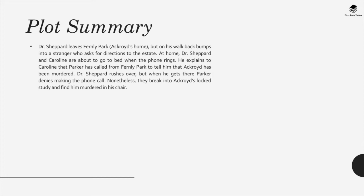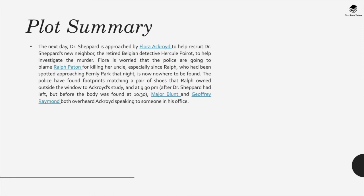Nonetheless, they break into Ackroyd's locked study and find him murdered in his chair. The next day, Dr. Shepard is approached by Flora Ackroyd to help recruit Dr. Shepard's new neighbor, the retired Belgian detective Hercule Poirot, to help investigate the murder. Flora is worried that the police are going to blame Ralph Patton for killing her uncle, especially since Ralph, who had been spotted approaching Fernley Park that night, is now nowhere to be found.